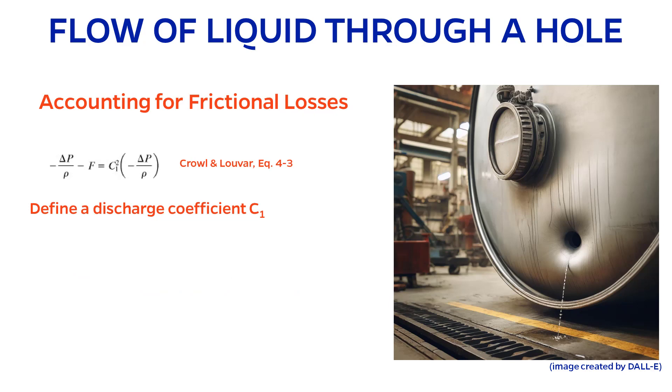Dealing with the frictional loss is a bit tricky. The approach used in the Crowell and Luvar book is to define a discharge coefficient like this. Instead of subtracting friction, you multiply the pressure drop term by C1 squared.